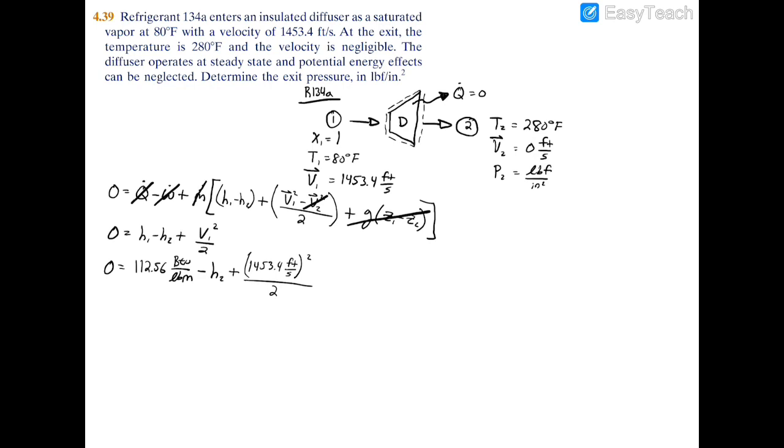We'll rearrange for H2. H2 equals 112.56 BTU per pound mass plus 1453.4 feet per second squared divided by 2. Before you conduct your calculation, you want to make sure your units are making sense. Is BTU per pound mass consistent with foot squared per second squared after you square out this unit? Let's figure out what a BTU per pound mass really is, so let's break this unit down.